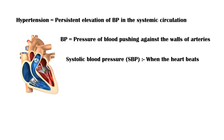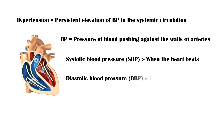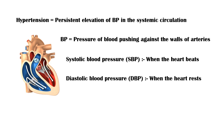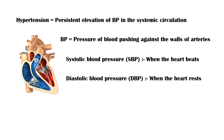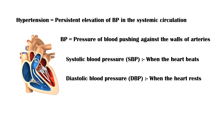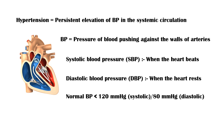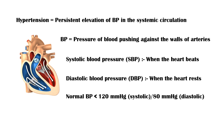The second number, called diastolic blood pressure, measures the pressure in the arteries when the heart rests between beats. Normal blood pressure is less than 120 mm of mercury systolic over 80 mm of mercury diastolic.